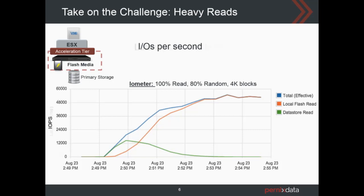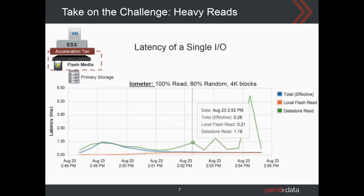Let's look at the latency. Initially, when the IOs were coming from storage, the latency that the VM saw was pretty close to what SAN would have provided. But as soon as the IO started coming from flash, the latency dropped to flash levels — almost 200 to 300 microseconds range. So this is tremendous.